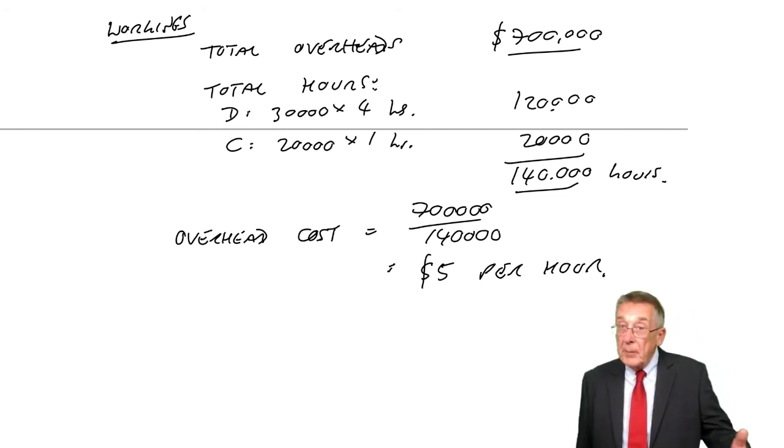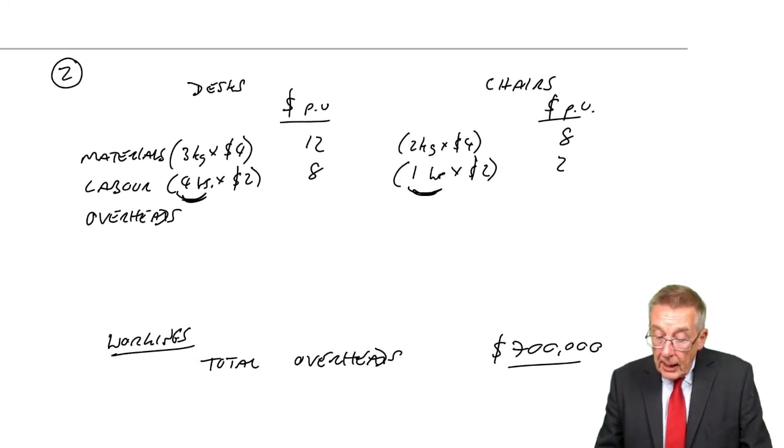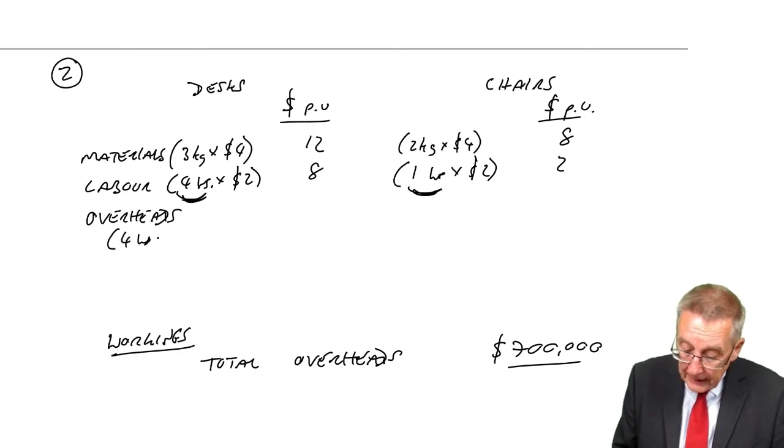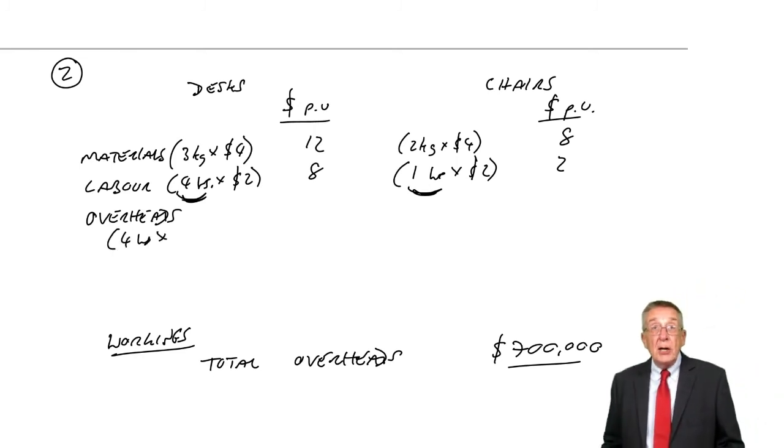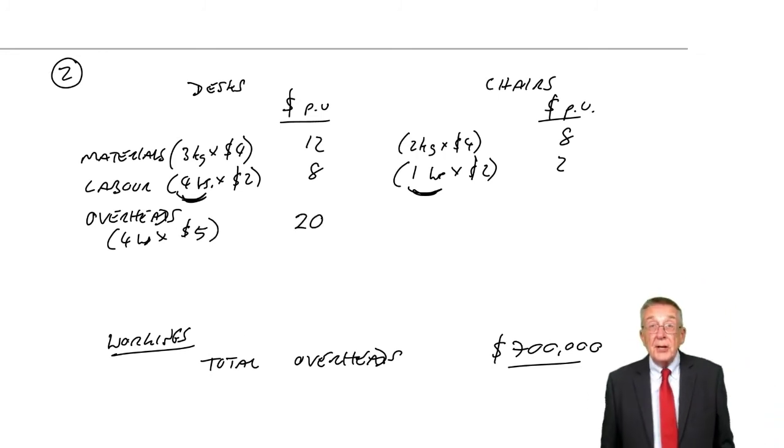Well, now, we can go back and finish the cost cards. How many hours does a desk spend in the factory? Four hours. And how much does each hour cost us in overheads? $5. So each unit is costing 20.